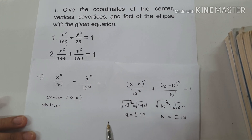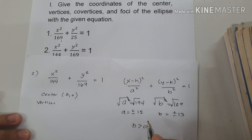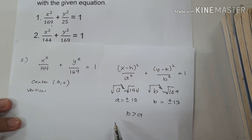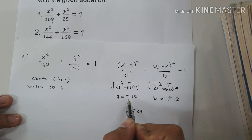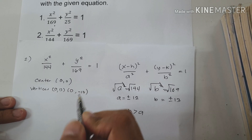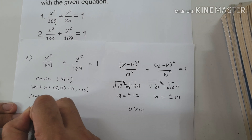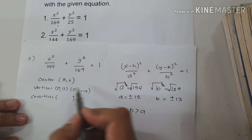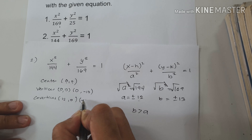For the vertices: observe that the value of b is greater than a. Whenever b is greater than a, the orientation is vertical. To find the vertices of a vertically oriented ellipse, we write (0, 13) and (0, negative 13). For the co-vertices, since the ellipse is vertically oriented, we add the value of a to the value of h and write the value of k, giving us (12, 0) and (negative 12, 0).